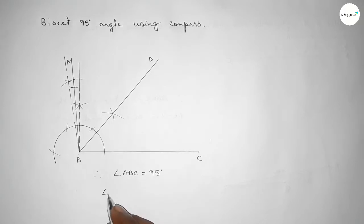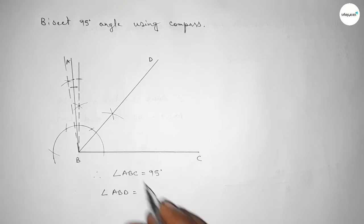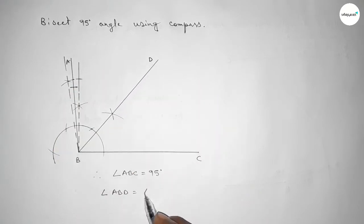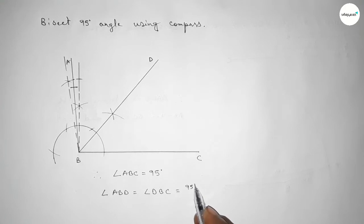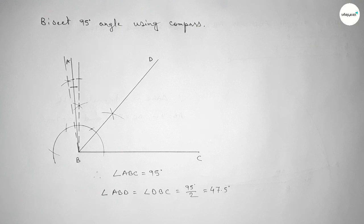Checking the angles: angle ABC equals 95 degrees, and angle ABD equals angle DBC equals 95 divided by 2, which is 47.5 degrees each. That's all — thanks for watching. If this video is helpful to you, please share it with your friends.